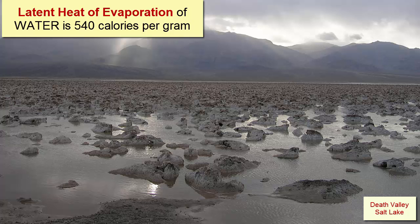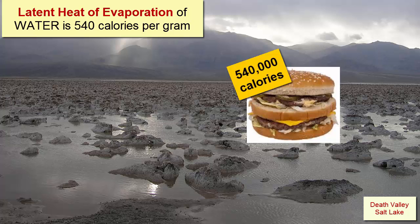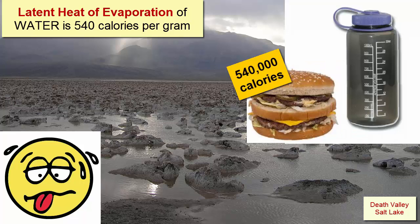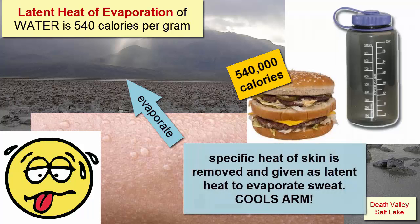The heat required to evaporate water is even higher, and also one of the highest of any common substance. It takes 540 calories of heat to evaporate 1 gram of liquid water. The calories in a Big Mac would be able to evaporate only 1,000 grams, or 1 kilogram of water. Sweating takes advantage of the high latent heat of evaporation, because the heat used to evaporate the sweat is heat removed from your skin, cooling you off. The heat added to the water is latent heat, used to break bonds; the heat removed from your skin is specific heat, used to change temperature. Water can also evaporate at temperatures less than the boiling point, but when it does, it requires even more heat.